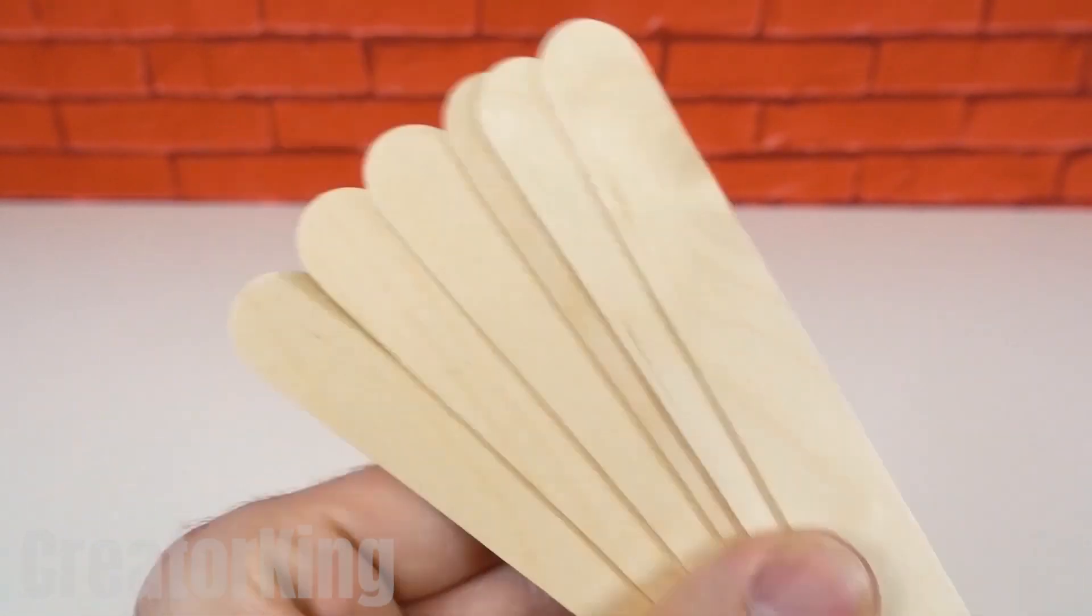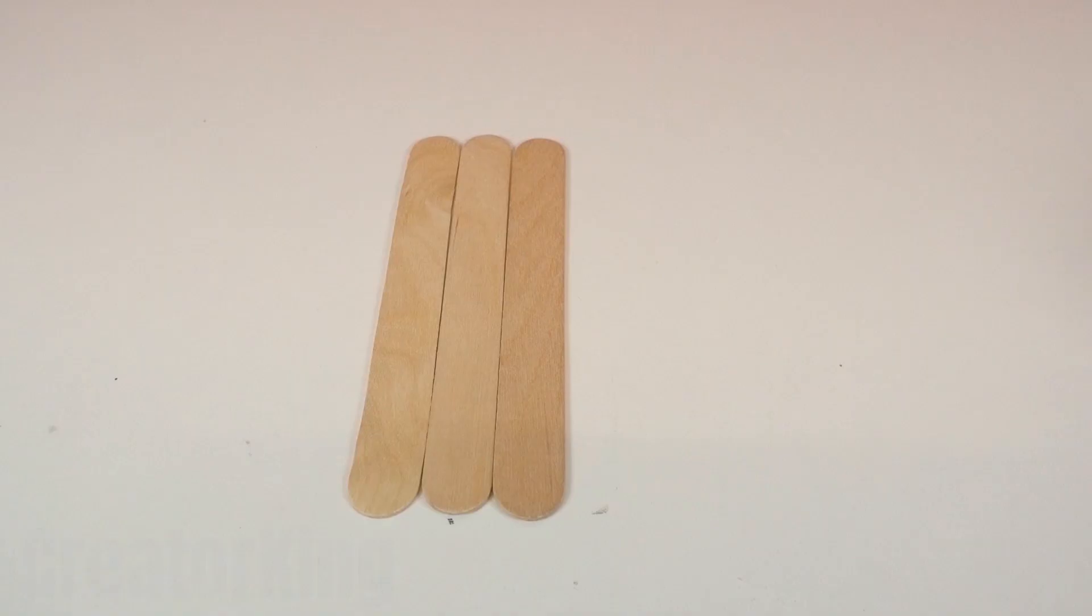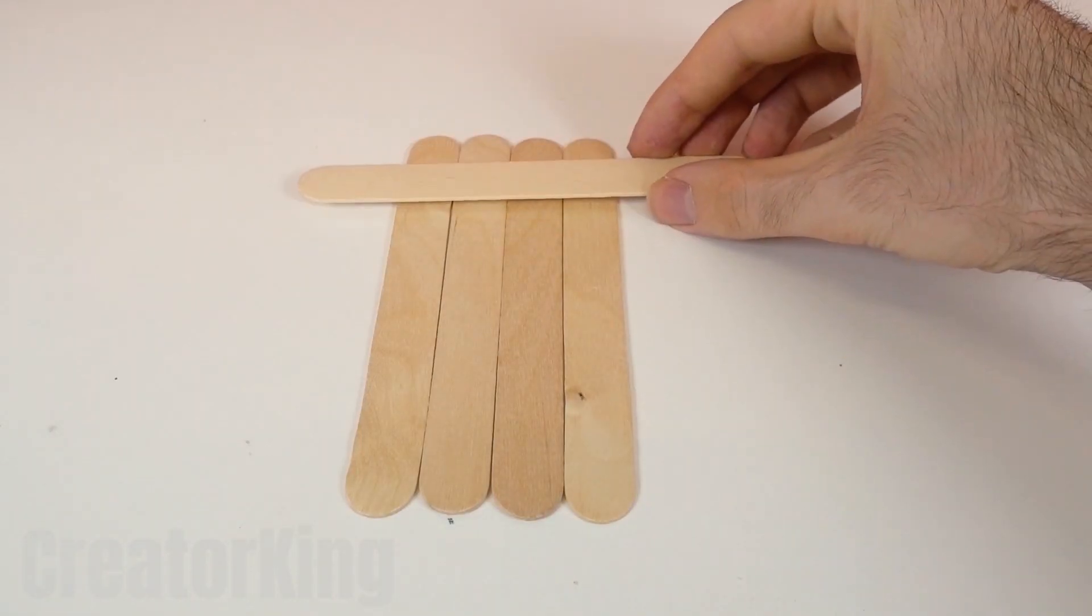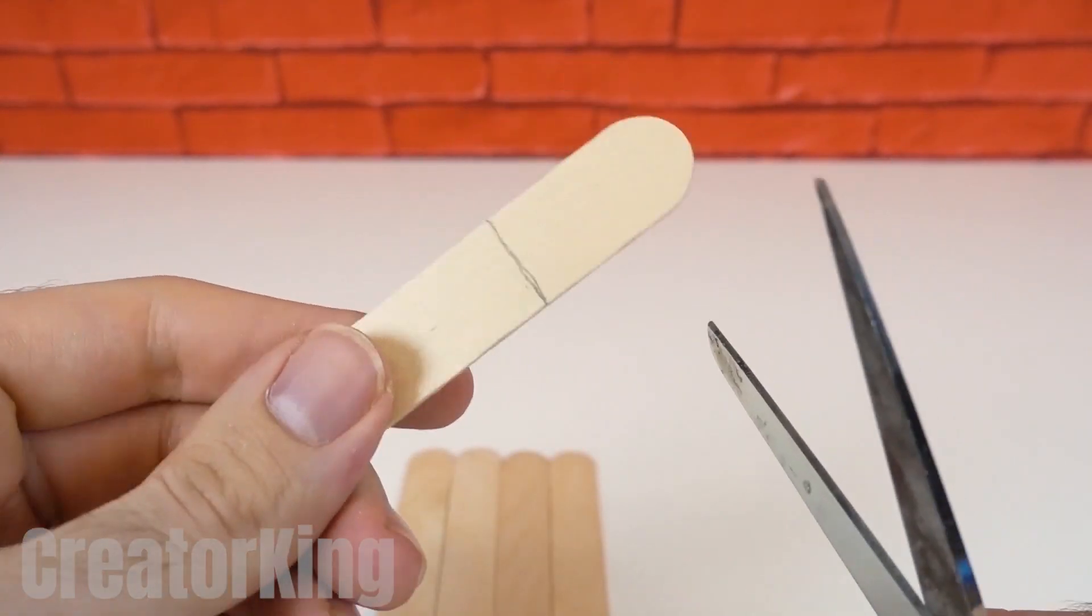Eat several Magnum popsicles to get some wooden sticks. Put them side by side to form a little board. The last stick will be used to measure the width of the board. After marking the marks, cut what we do not need with scissors.